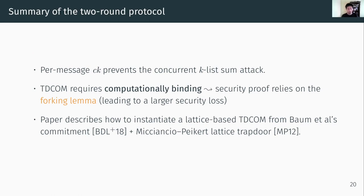A bit more about the security: inevitably, the trapdoor commitment scheme requires computational binding. This seems to require some kind of rewinding technique. In our security proof, we had to rely on the forking lemma, which leads to a larger security loss than the lossy identification technique. Although I didn't have time to talk about the trapdoor commitment scheme and the concrete instantiation, in our paper we have a concrete instantiation based on lattice-based assumptions.